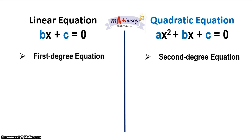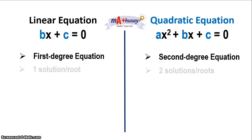A linear equation is a first-degree equation, meaning the exponent of the leading term is 1. On the other hand, for a quadratic equation, the highest exponent is 2.